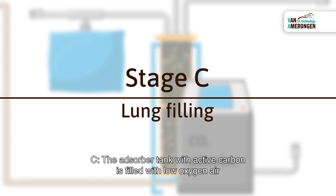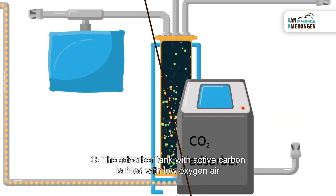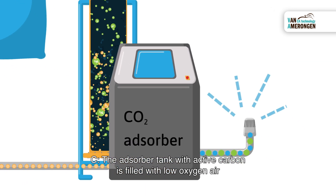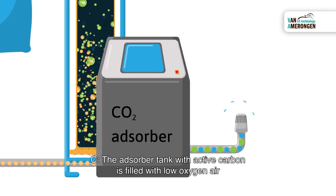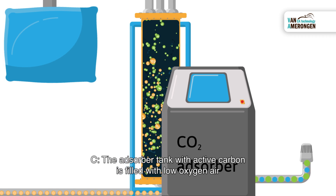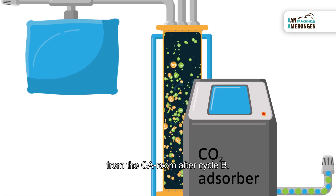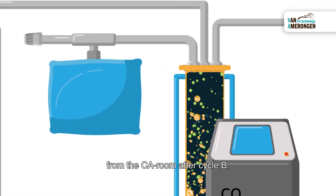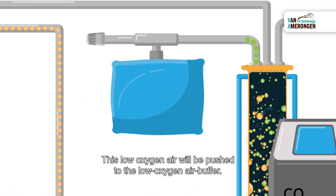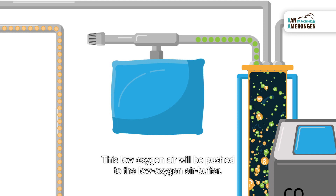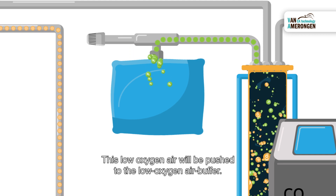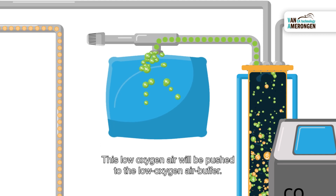C. The adsorber tank with active carbon is filled with low-oxygen air from the CA room after cycle B. This low-oxygen air will be pushed to the low-oxygen air buffer.